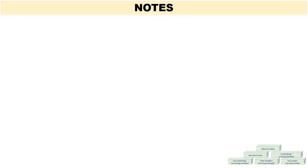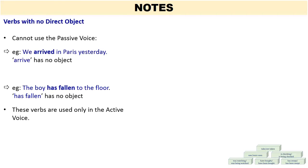Some notes on the passive voice. First, take note that with verbs that have no direct object, we cannot use the passive voice. For example: We arrived in Paris yesterday — 'arrive' has no object, so we would not change this sentence into the passive voice. Another example: The boy has fallen to the floor — 'has fallen' has no object, so again we would not use the passive voice for a sentence like this. These verbs are used only in the active voice.